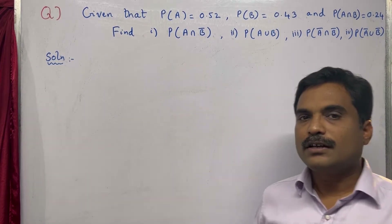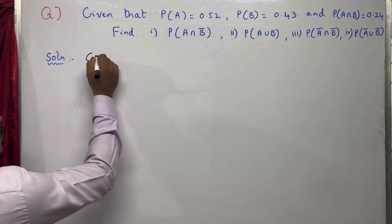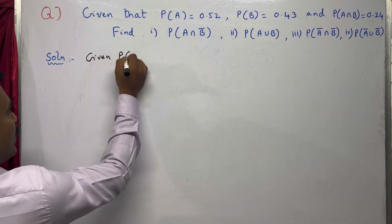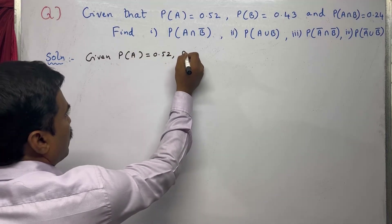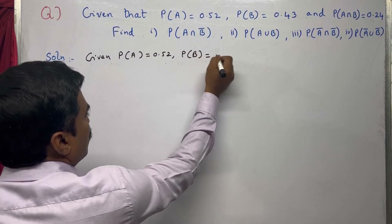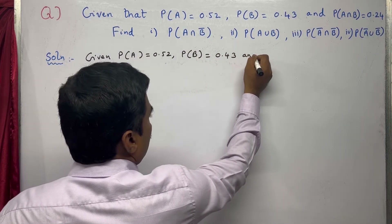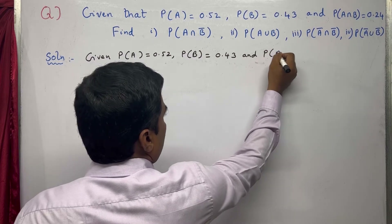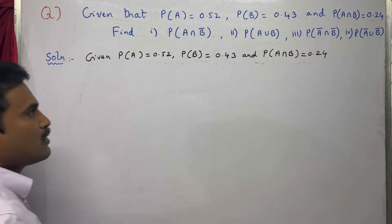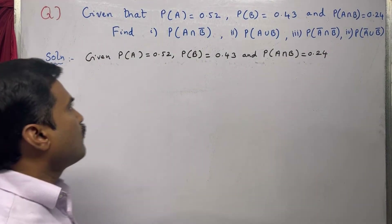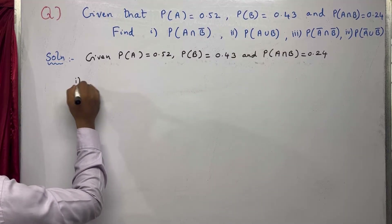First, we write the given values. Given: P(A) = 0.52, P(B) = 0.43, and P(A∩B) = 0.24. These three values are given. Now we start with the first part.